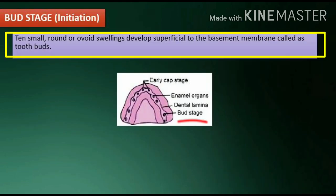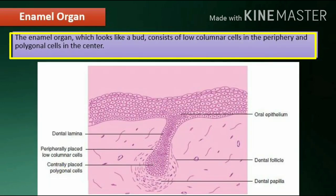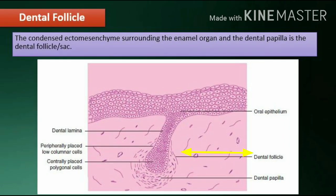Bud stage: This is the initial stage of tooth development. Ten small, round, or ovoid swellings develop superficial to the basement membrane, called tooth buds. The enamel organ, which looks like a bud, consists of low-columnar cells in the periphery and polygonal cells in the center. The condensed ectomesenchyme immediately under the enamel organ is the dental papilla, and the condensed ectomesenchyme surrounding the enamel organ and the dental papilla is the dental follicle or sac.